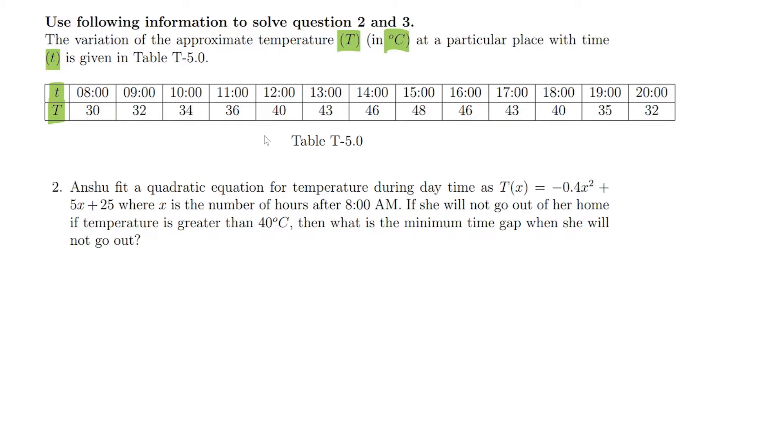Anshu fit a quadratic equation for temperature during daytime as T(x) equals minus 0.4x squared plus 5x plus 25, where x is the number of hours after 8 AM.